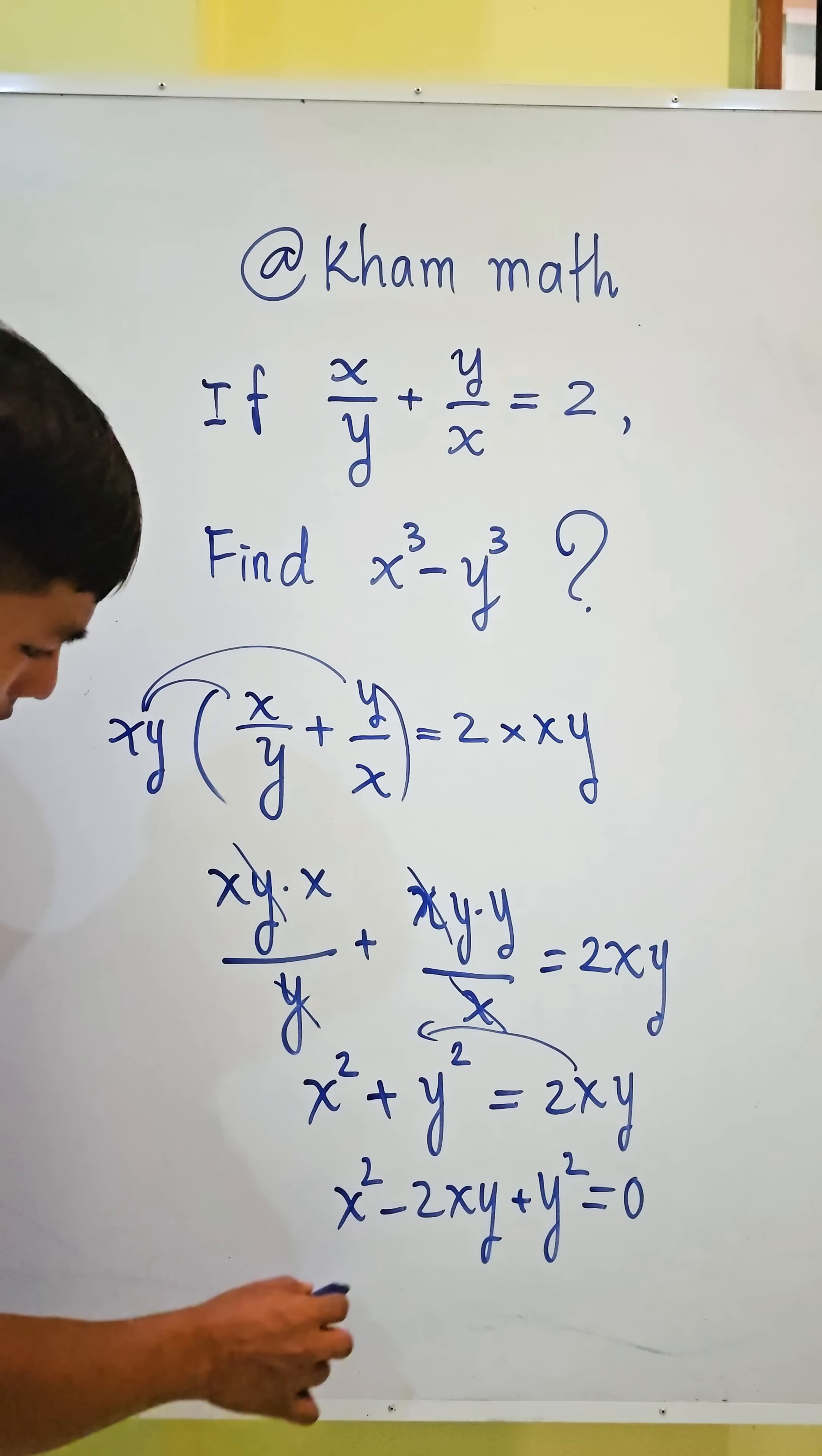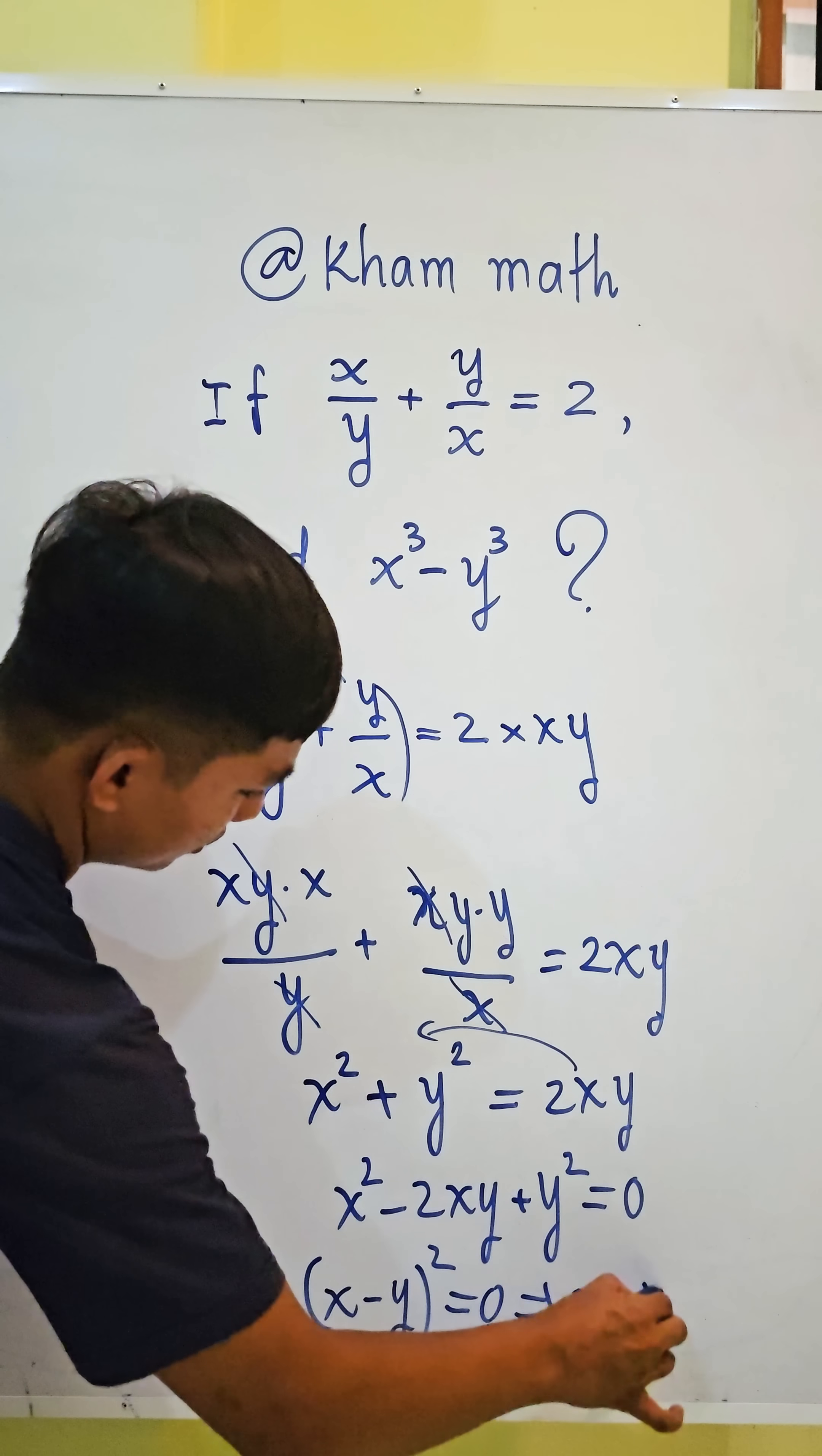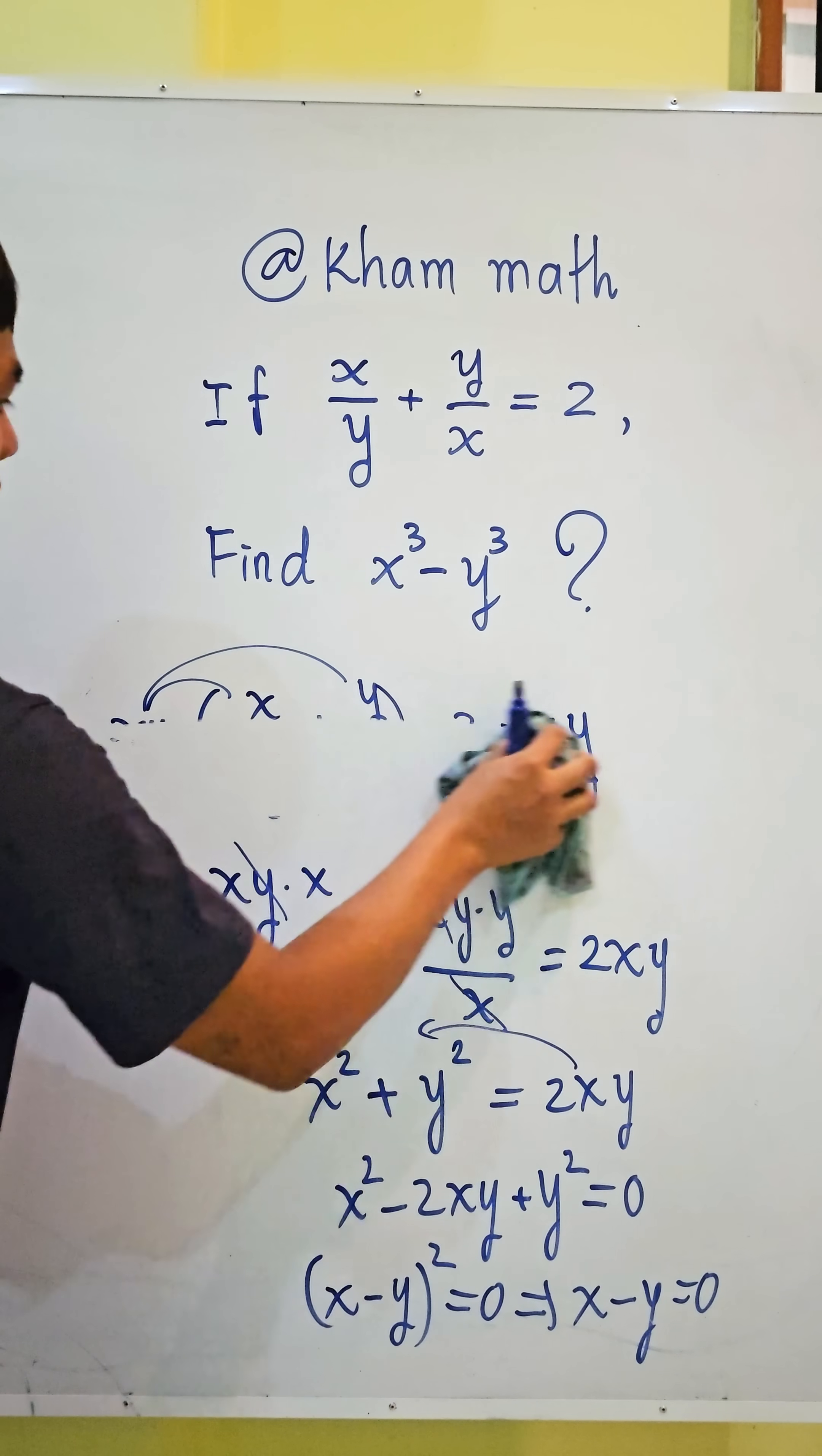So we get x - y = 0. We use this to find x³ - y³.